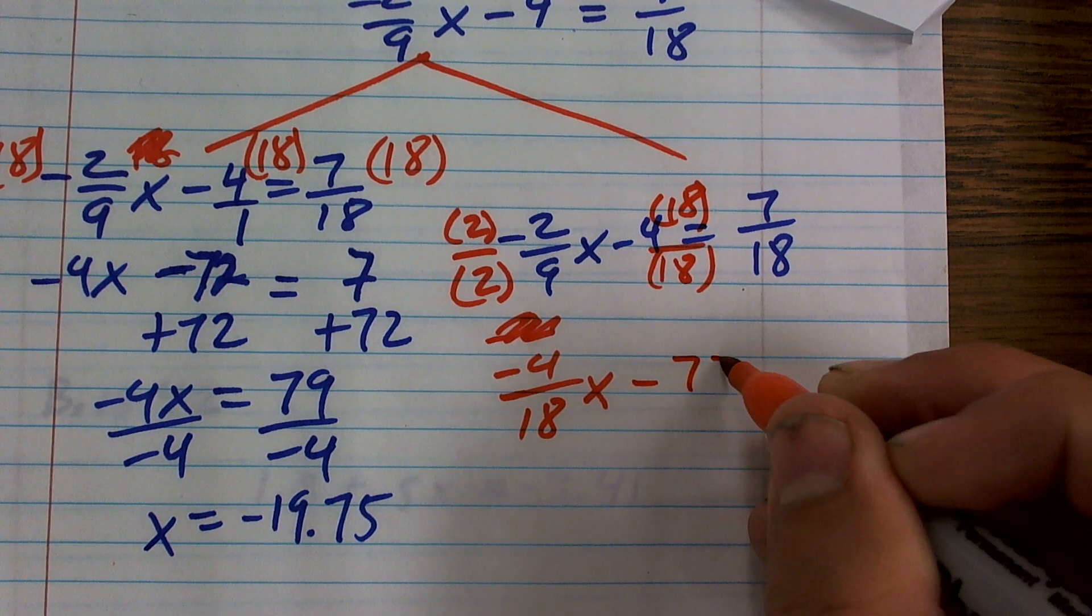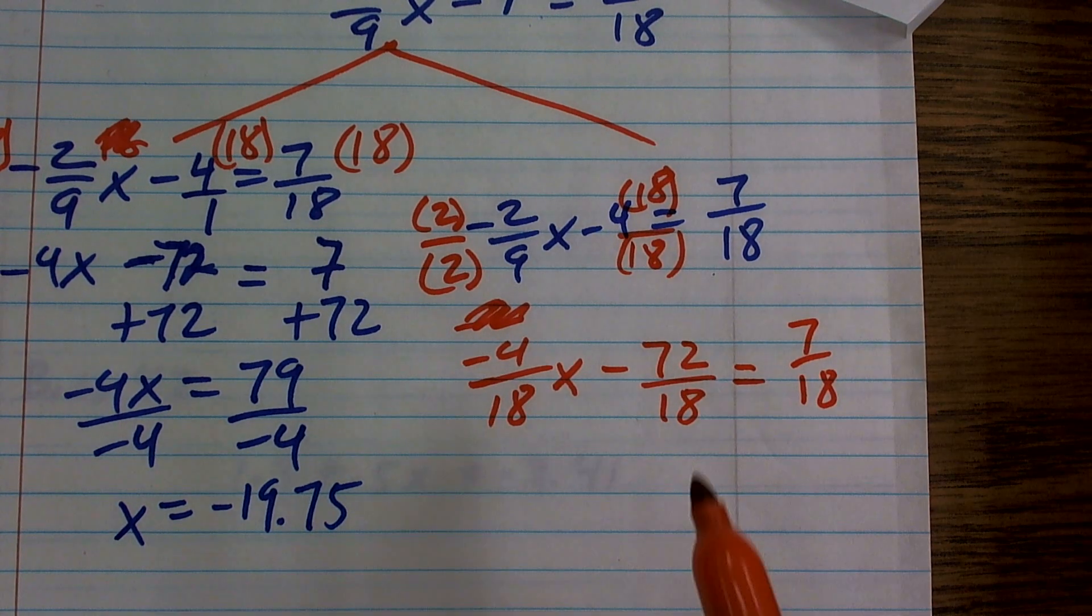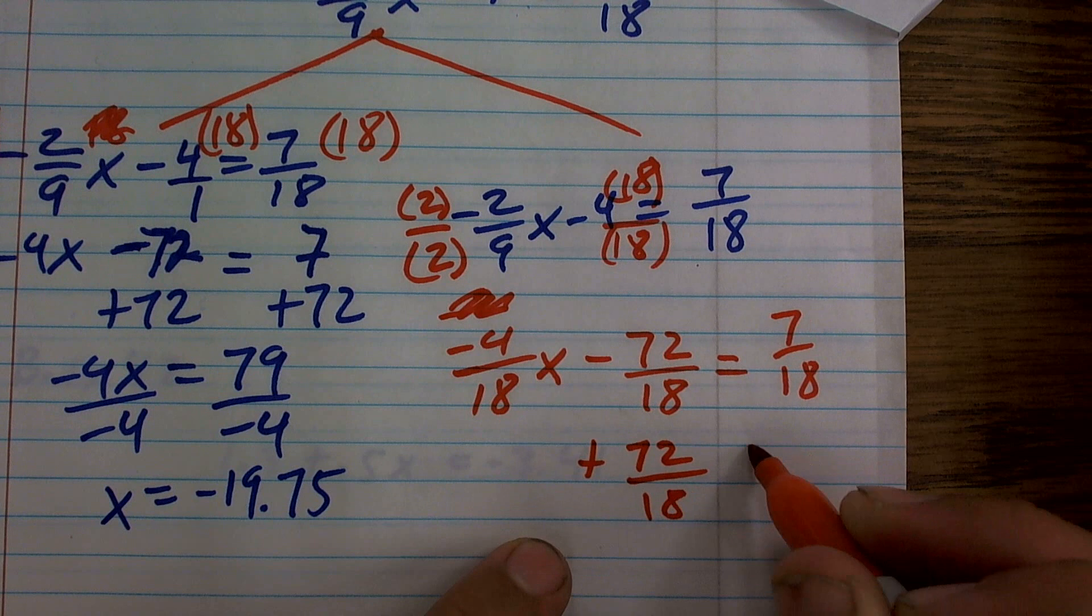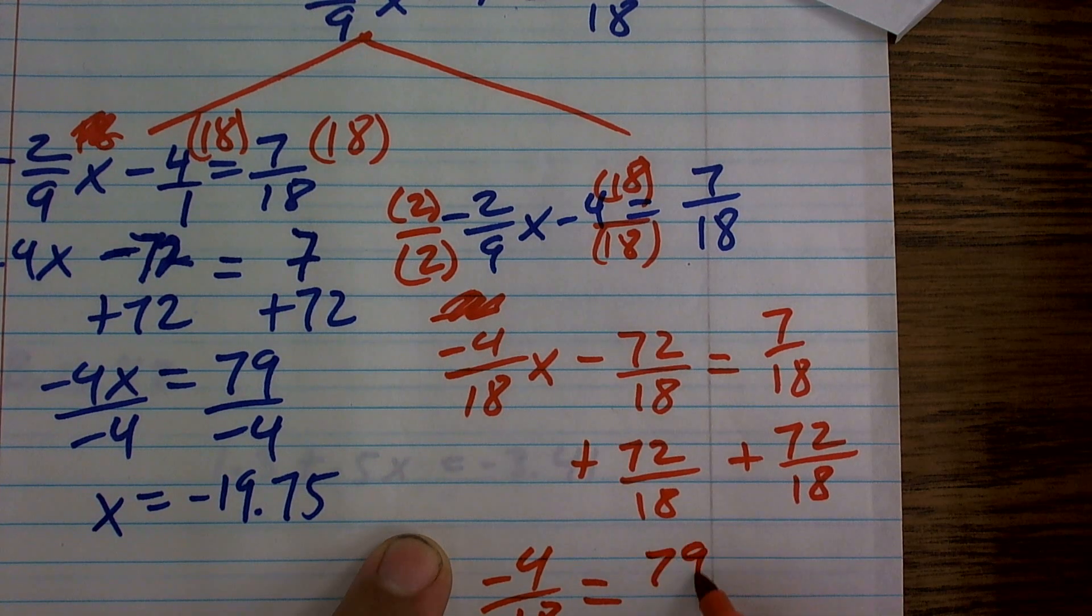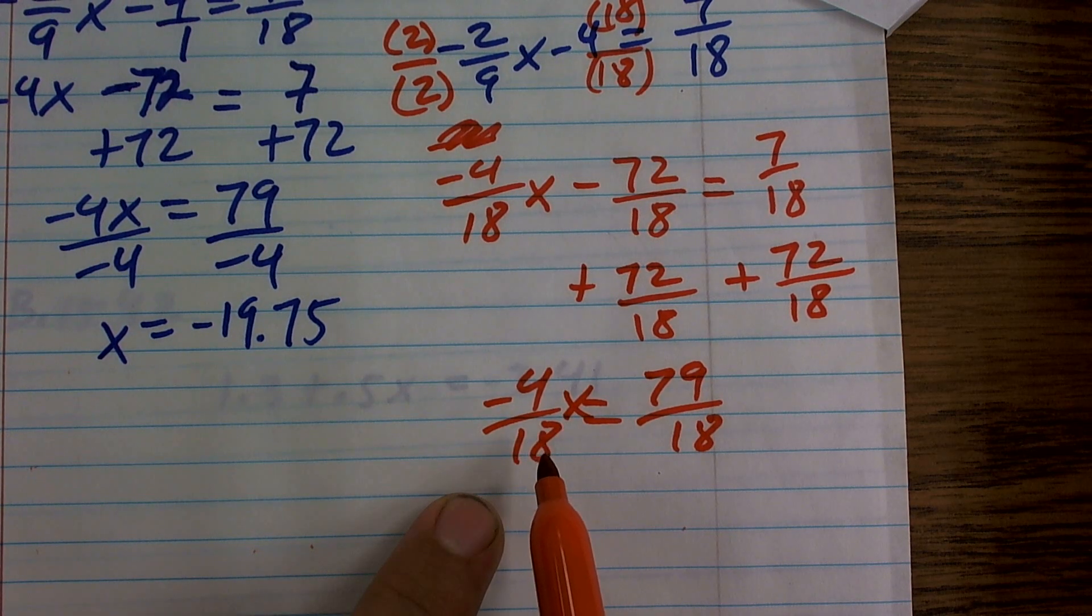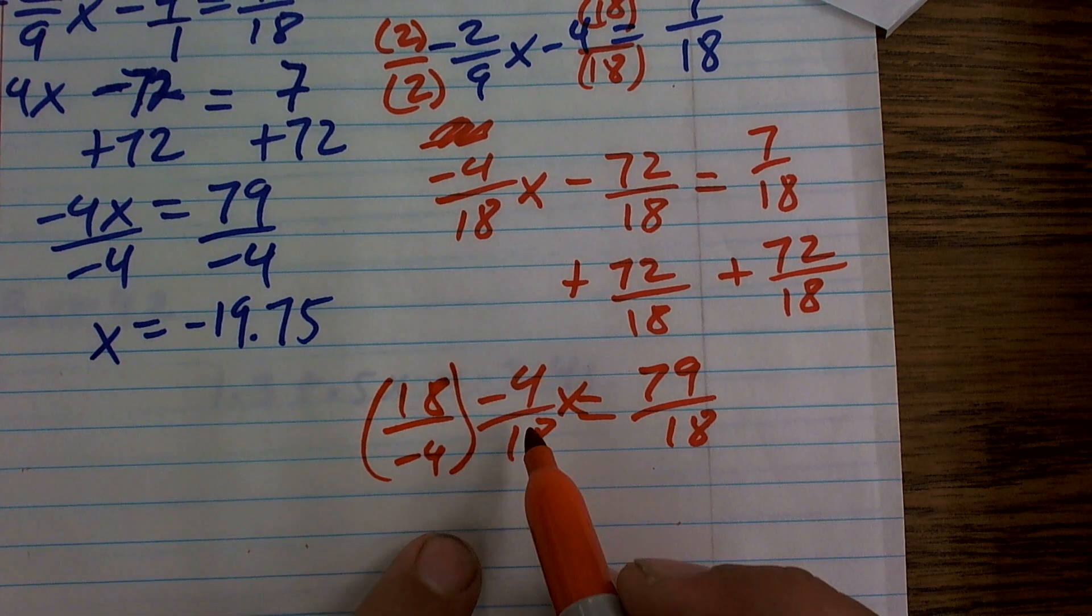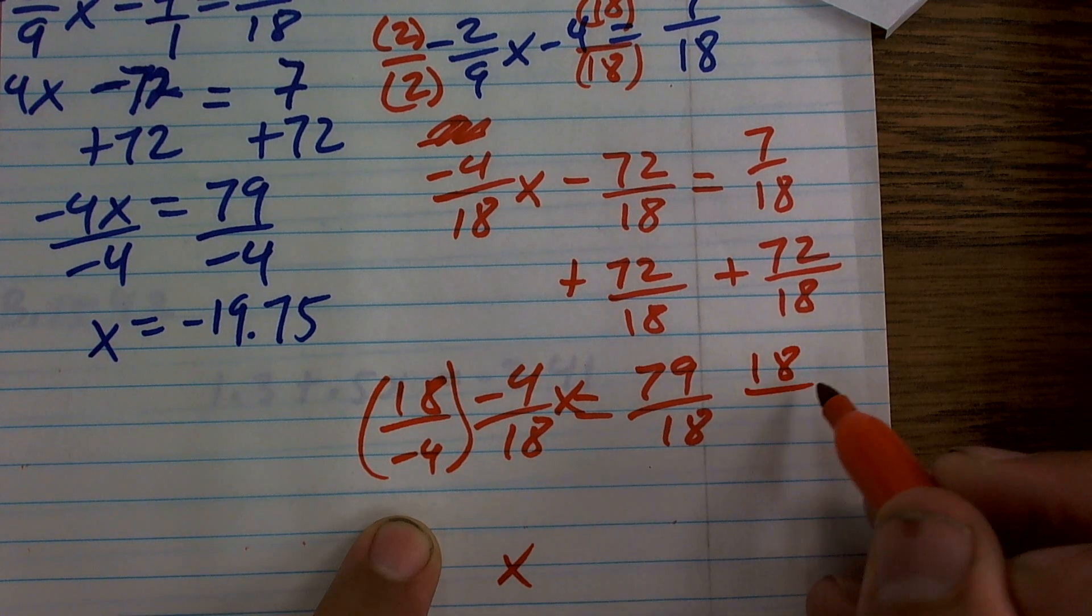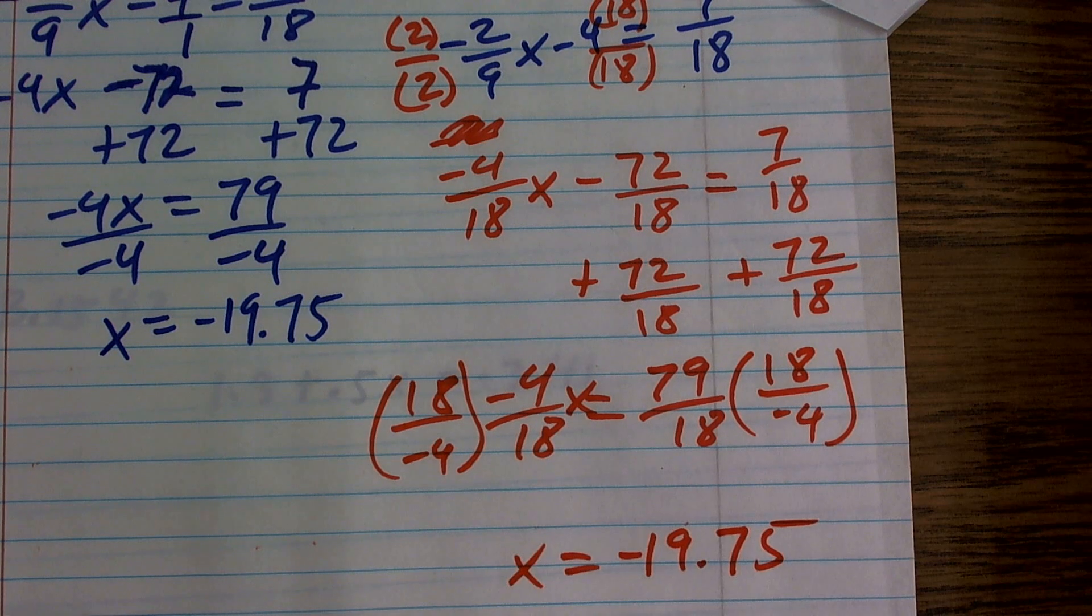So negative 4 times 18 is going to be negative 72 over 18 equals 7/18. Now, you can see that since I have all the same denominator, it's really cool. I can just use my inverse operations. It's just going to be with fractions. But you can all combine because they all have the same denominator. So I have negative 4 over 18x equals 79 over 18. Then remember to undo your reciprocal. When you have a fraction times a variable, you can just multiply by the reciprocal. Because a number multiplied by its reciprocal is going to produce 1. And 1 times x is x. So when I multiply by 18 over negative 4 on the other side, you'll end up getting negative 19.75.